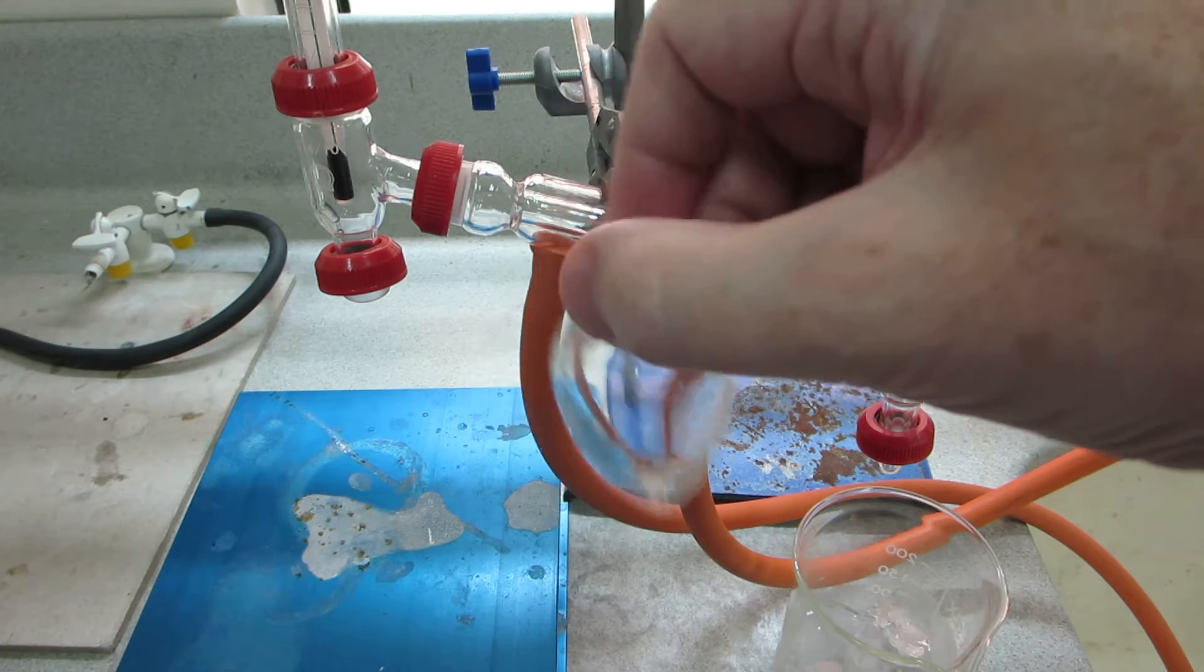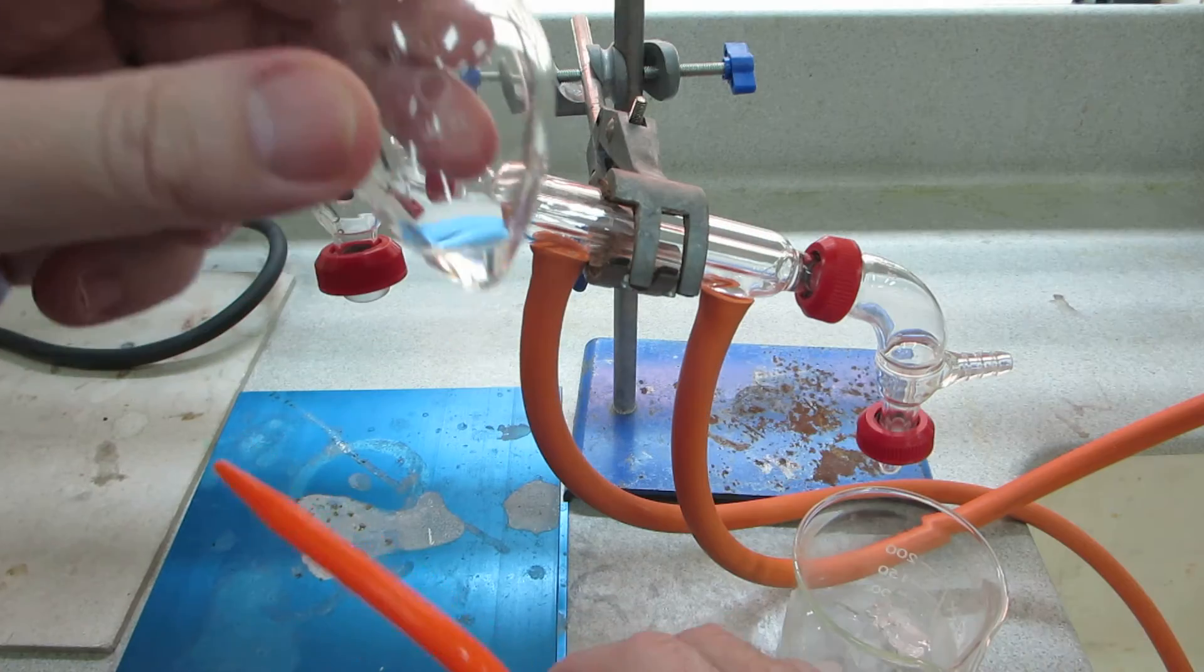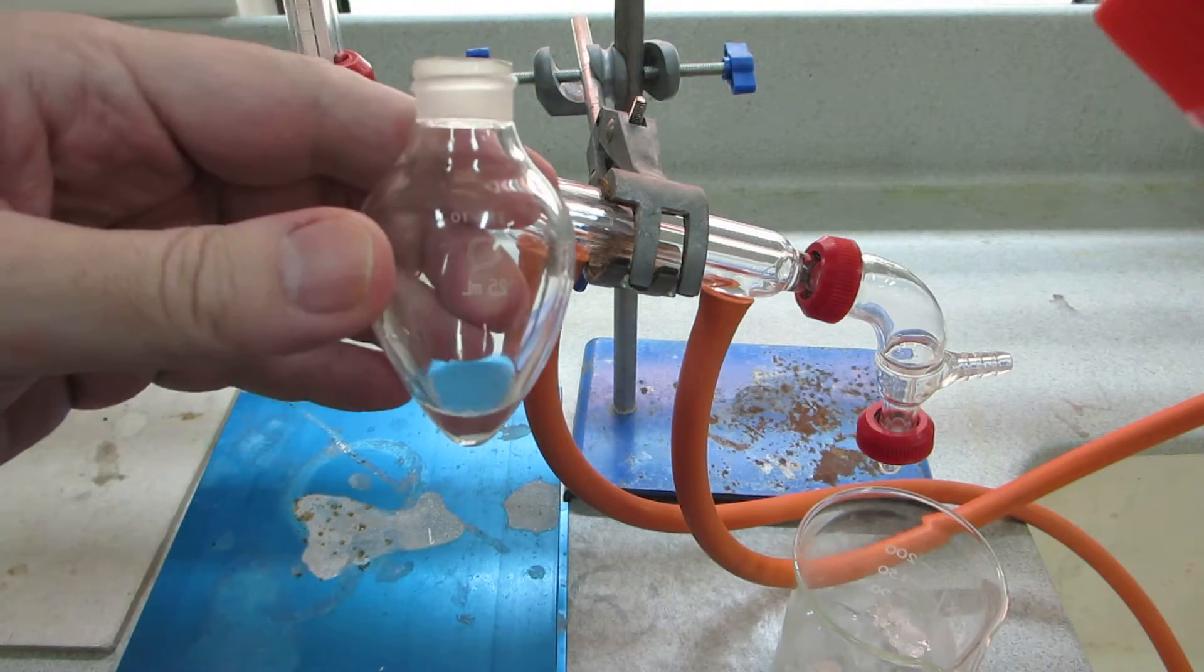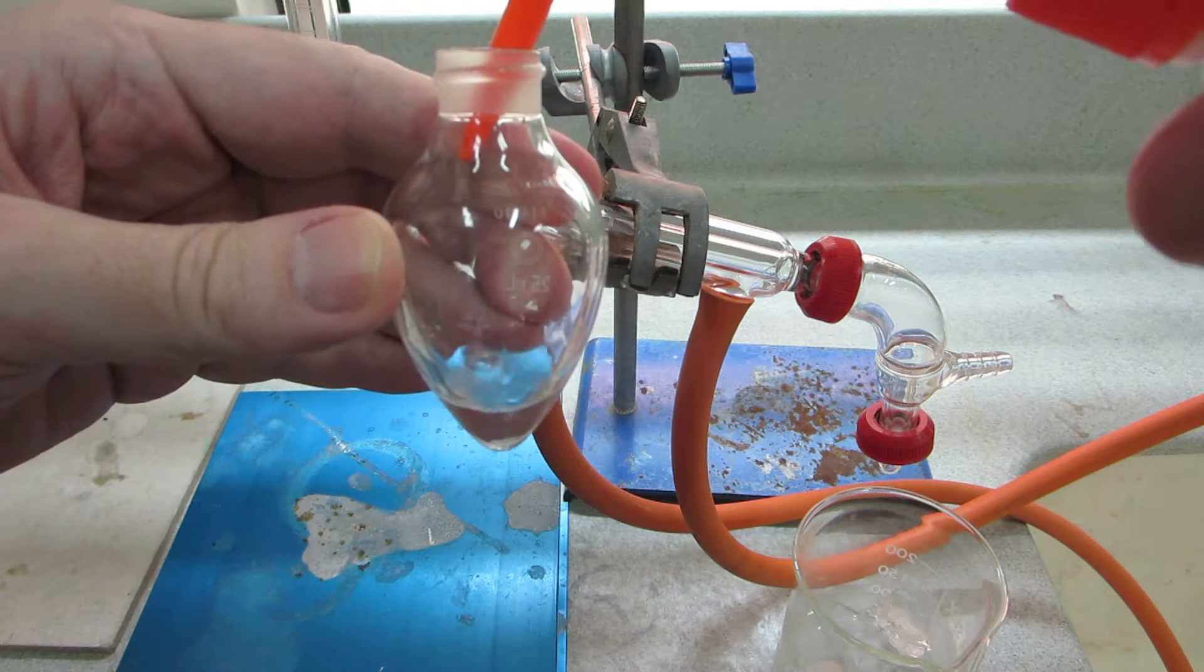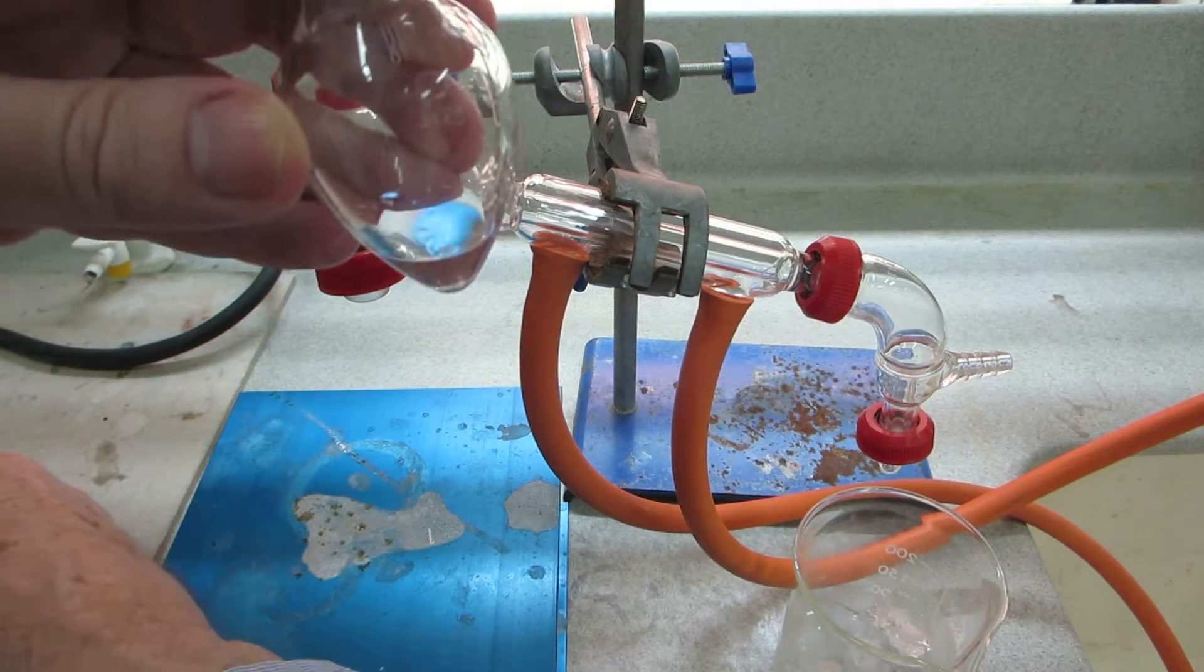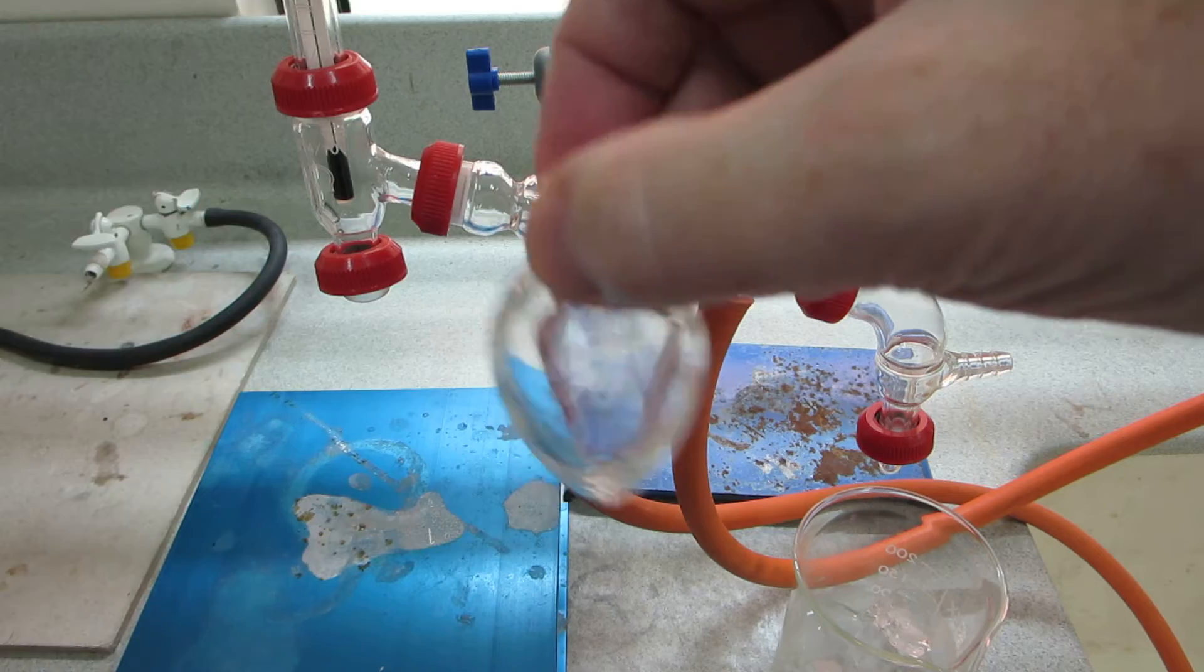Once we've dissolved the iron(II) sulfate we can add the ethanol and we need to add about one to two ml of ethanol. Estimate that and now we're ready to add the hydrogen peroxide.